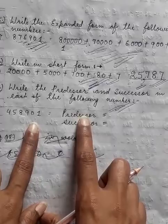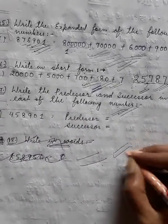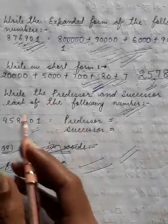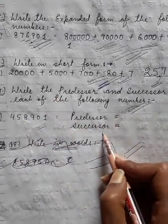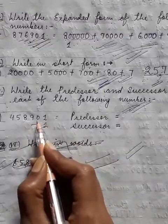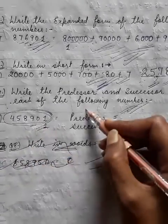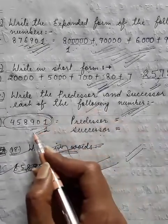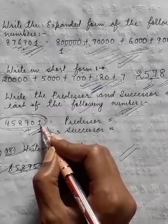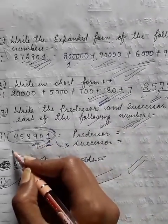So now we can write down predecessor and successor very easily. To find the predecessor of a given number, we subtract one from it — jab hum minus one karte hain to predecessor milta hai. And by adding one to the given number, humi successor mil jayega. So first of all, to find the predecessor, we subtract one from the given number.